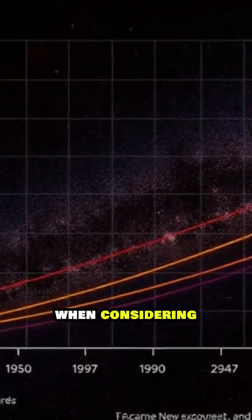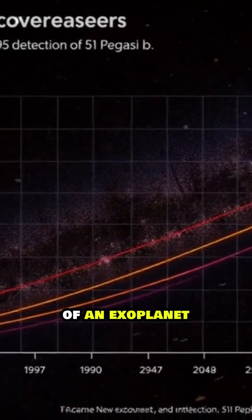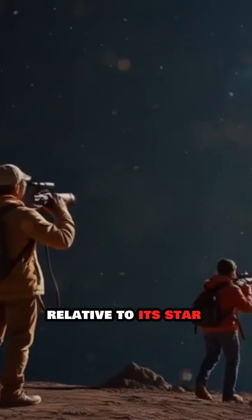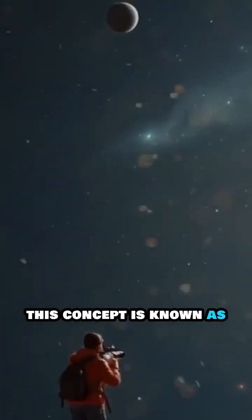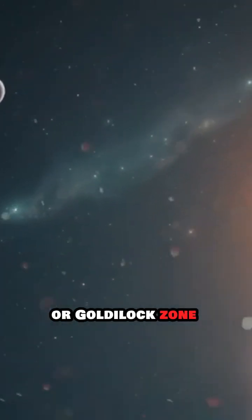The first criterion when considering the habitability of an exoplanet is its position relative to its star. This concept is known as the habitable zone or Goldilocks zone.